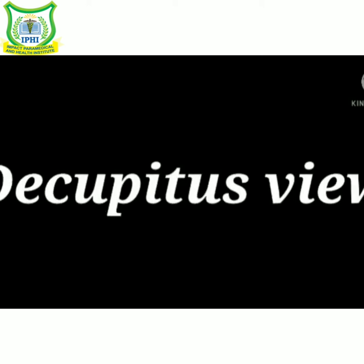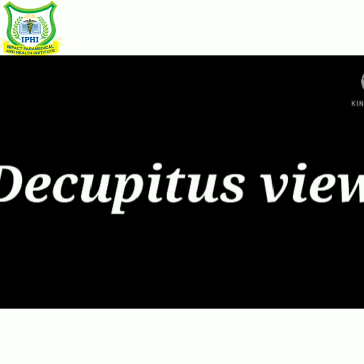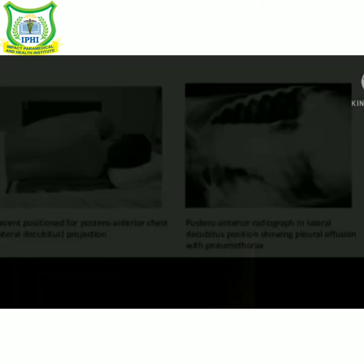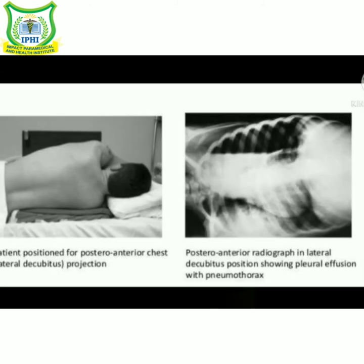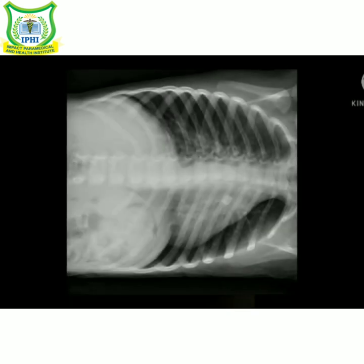The last is decubitus view. In this, the patient lies on the affected side to demonstrate fluid in the pleural cavity. The cassette is placed vertically behind or in front of the patient, and the centering is at the level of the middle of the cassette using a horizontal beam.